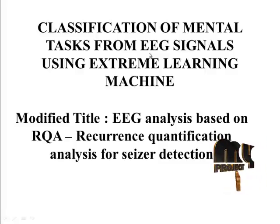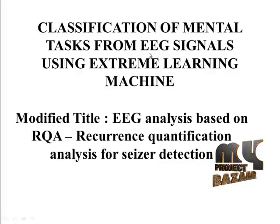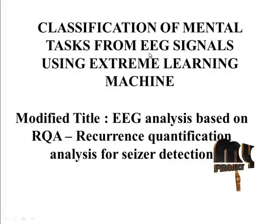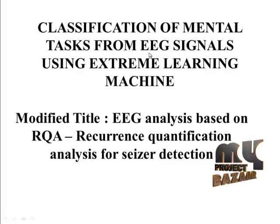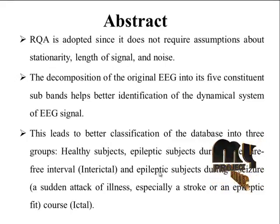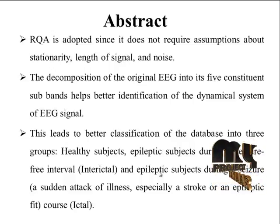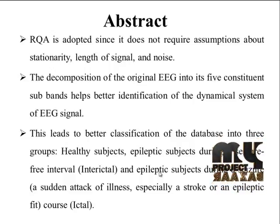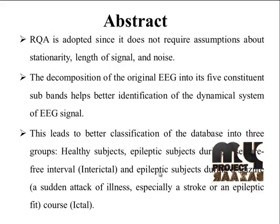As our enhancement, we are modifying the title — our processing is based on recurrence quantification analysis for seizure detection. This product represents applying RQA on EEG recordings and their subbands. The subbands are delta, theta, alpha, beta, and gamma for epileptic seizure detection.